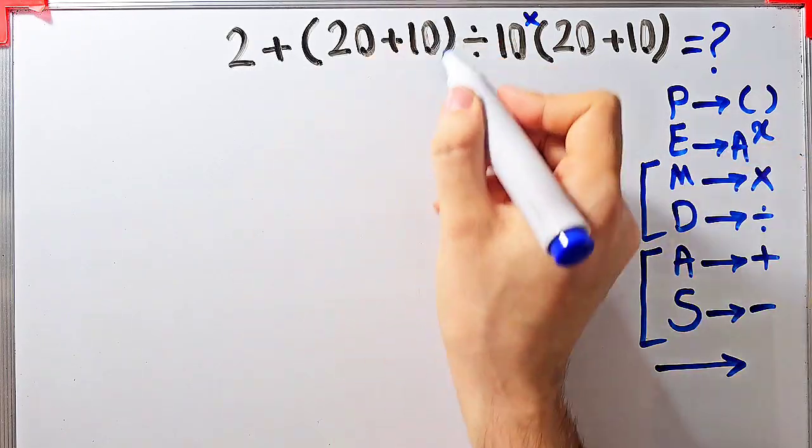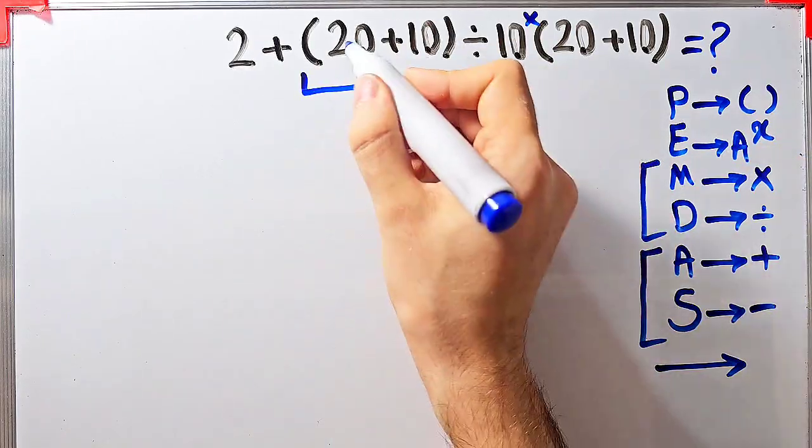According to the PEMDAS rule, first we simplify these parentheses. We have 20 plus 10, which equals 30.